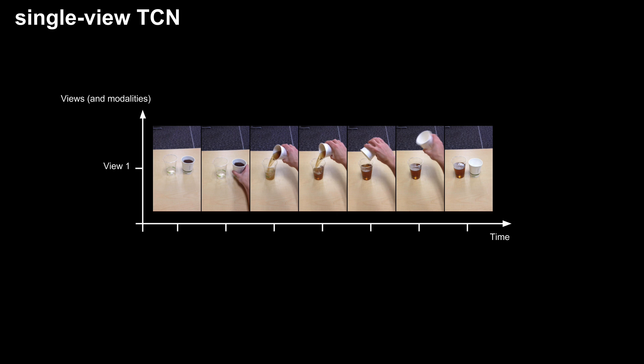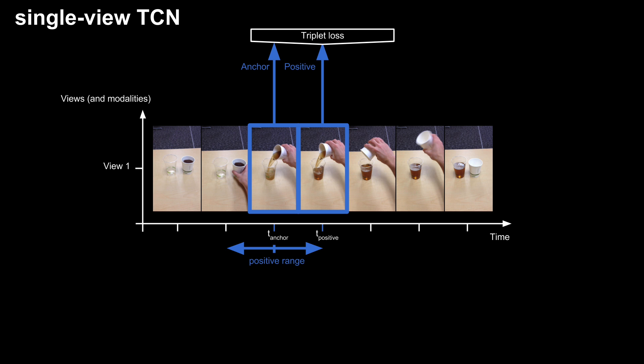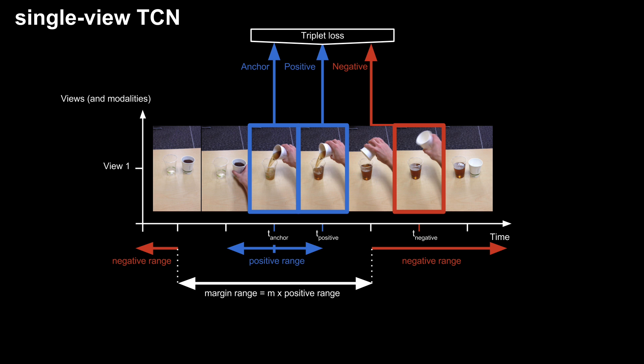We can also consider a time contrastive model trained on only one view. This time, the positive frame is randomly selected within a certain range of the anchor. A margin range is then computed given the positive range. Negatives are randomly chosen outside the margin range, and the model is trained as before.